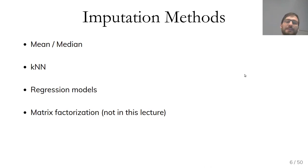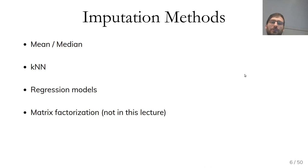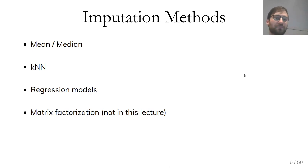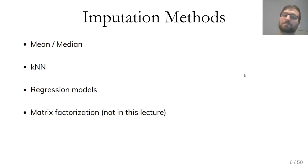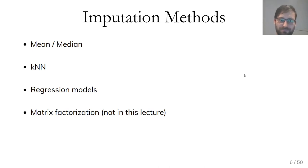There are basically three or four common ways that imputation is done. The most simple is median or mean imputation — whenever there's a missing value in a column you replace it with the mean or median. Then you can do machine learning model-based approaches using nearest neighbors or regression models. Finally, there are matrix factorization approaches which try to impute all of the columns in a missing dataset at once by finding a latent representation of the data and using it to fill in missing values. We'll focus on the first three.